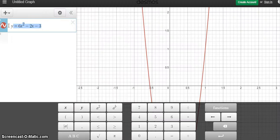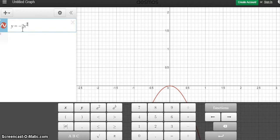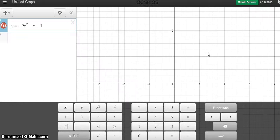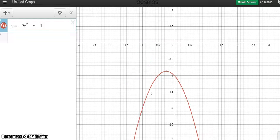So minus 2x squared, so y equals minus 2x squared, minus x, minus 1. And let's have a look where the graph is. So you can see here that the x-intercepts don't, in fact, the parabola doesn't even reach the x-axis.